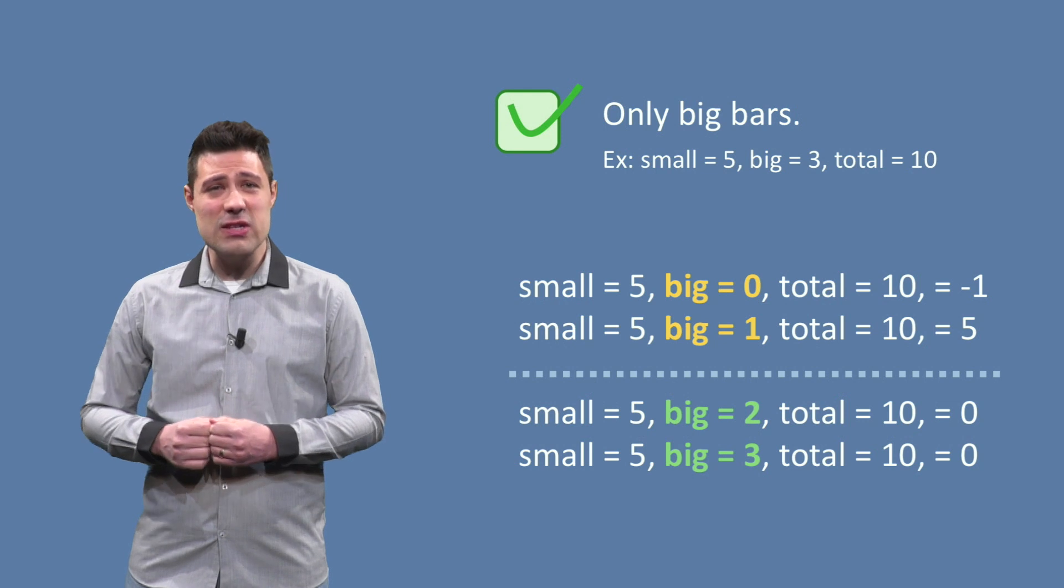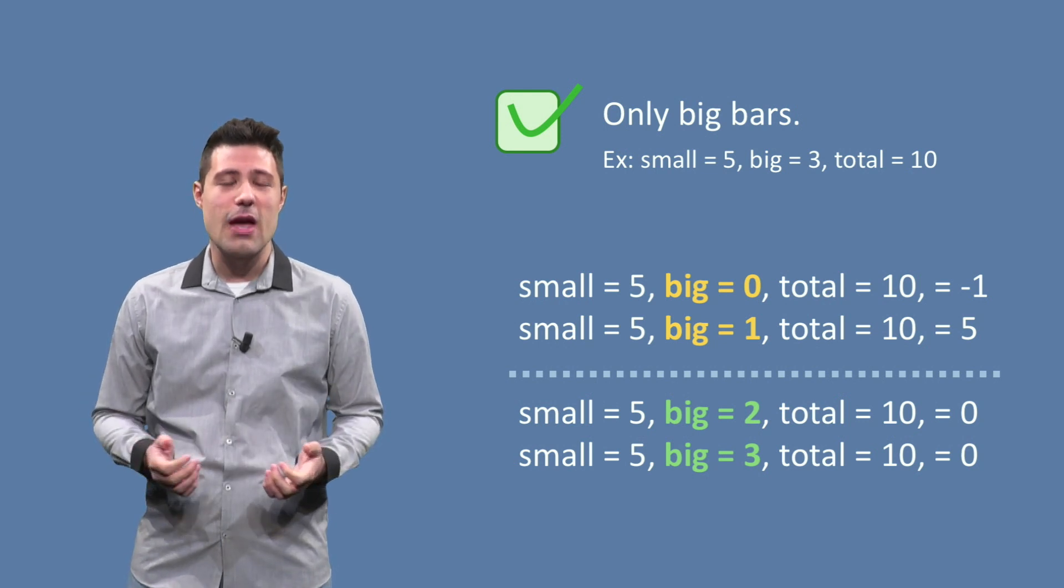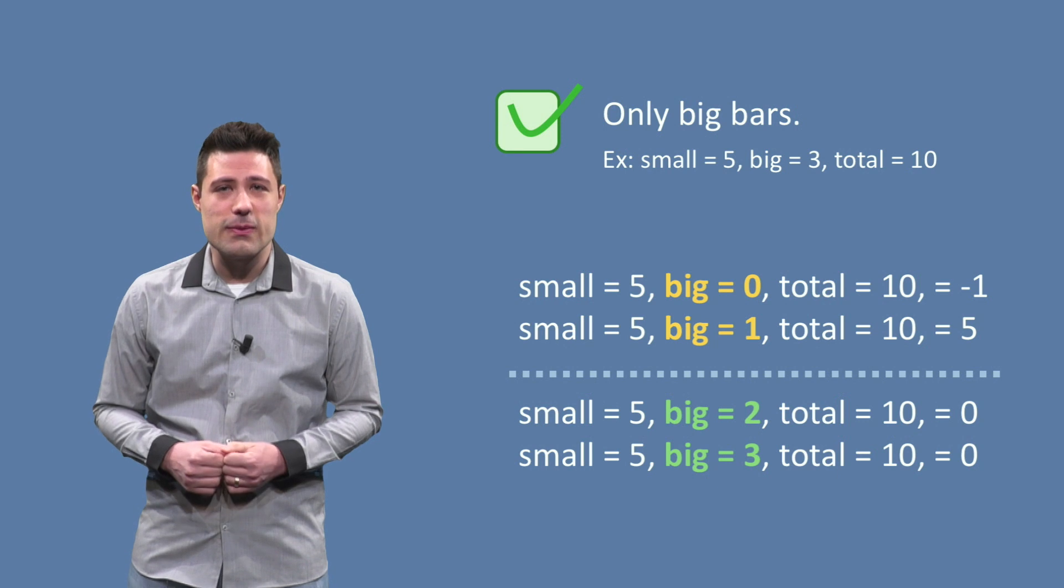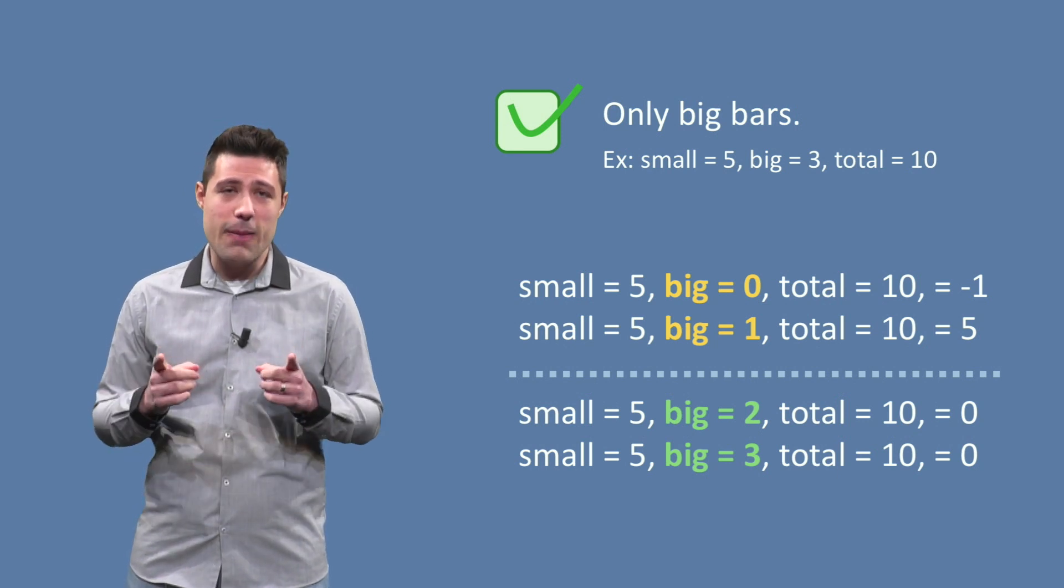When big is precisely 2, there is no need for small bars. When big is smaller than 2, there is a need for small bars. That is the boundary.